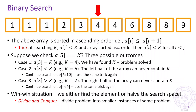The binary search algorithm is an example of what is called the divide and conquer strategy, which solves the problem by dividing the original problem into smaller instances of the same problem. In this case, we took the problem of searching for a key in a large array and reduced it to the problem of searching for that same key in a much smaller array.